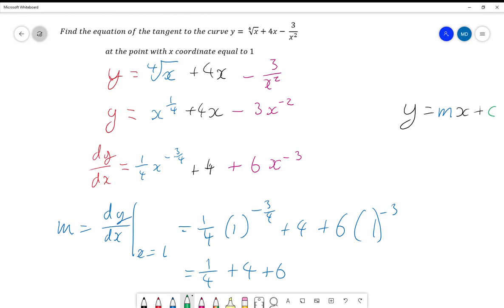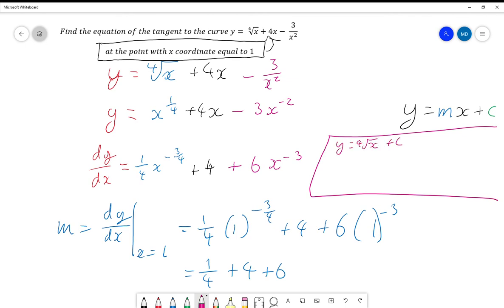So the way to get the y coordinate is to take this value of 1 and plug it into the original equation, because the original equation is the equation of the curve we're actually dealing with. So to get the actual coordinate, we need to plug it into the original equation. So doing that, I'm going to do it to the side over here. We've got y equals the fourth root of x plus 4x minus 3 over x squared. And we're plugging in x equals 1. So we get y is equal to the fourth root of 1 plus 4 times 1 minus 3 over 1 squared. And so y is equal to 1 plus 4 minus 3, which equals 2.